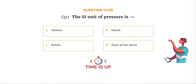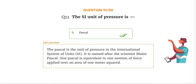The correct answer is Option B: Pascal. The Pascal is the unit of pressure in the International System of Units, SI. It is named after the scientist Blaise Pascal. 1 Pascal is equivalent to 1 Newton of force applied over an area of 1 meter squared.